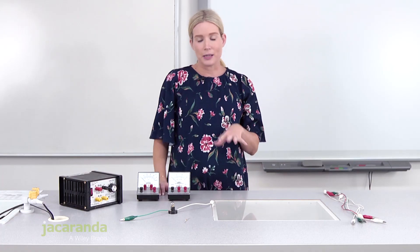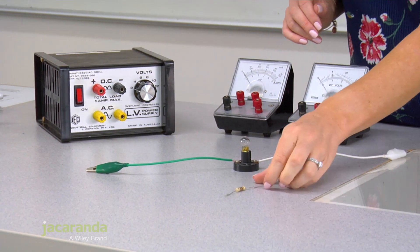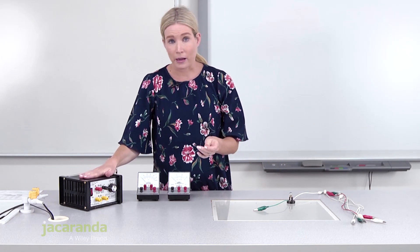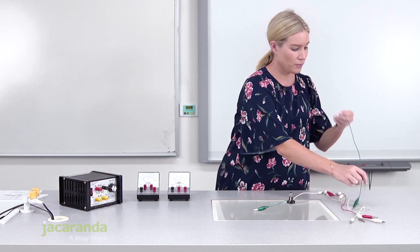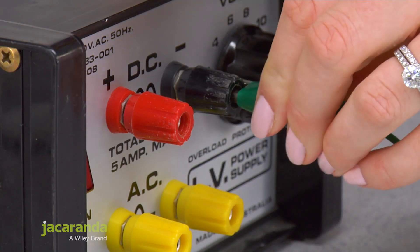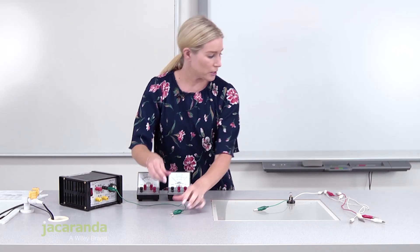We need to put these devices in a simple circuit so that we can measure the current flowing through them and the potential difference across them. Once we look at these numbers, we can examine the relationship between voltage and current. Starting with the resistor, I'm going to hook it up to the power pack using wires. The simplest circuit is two wires connected from the terminals of the power pack directly to the resistor.